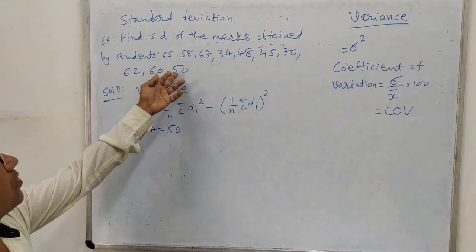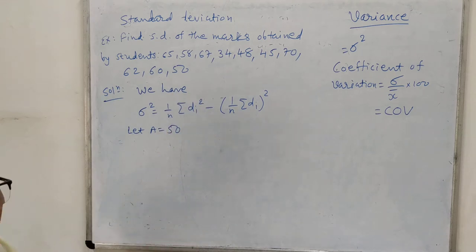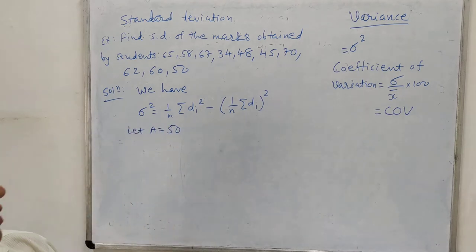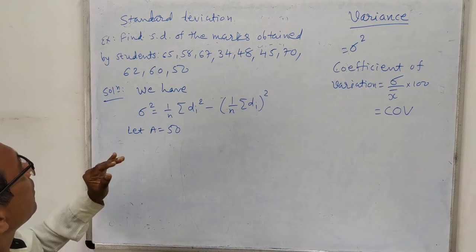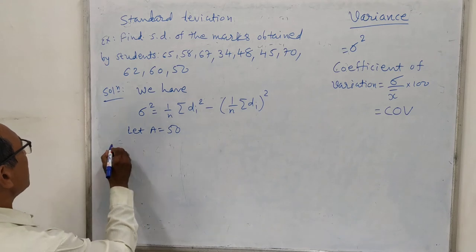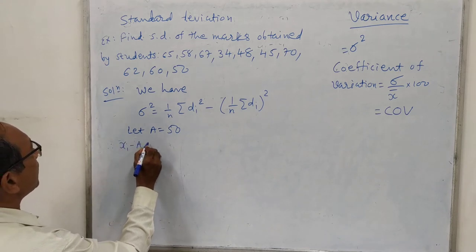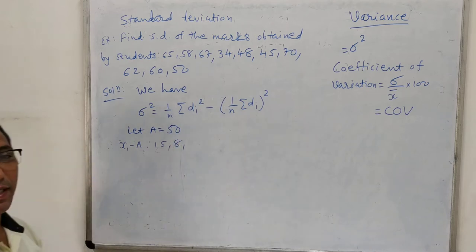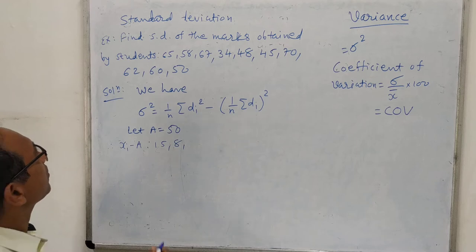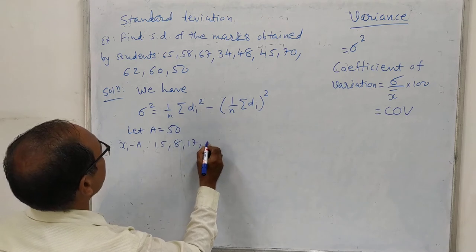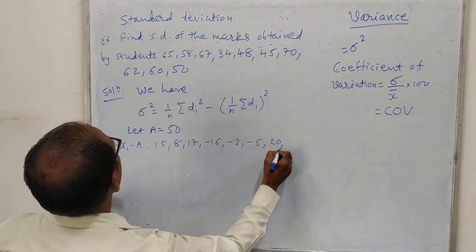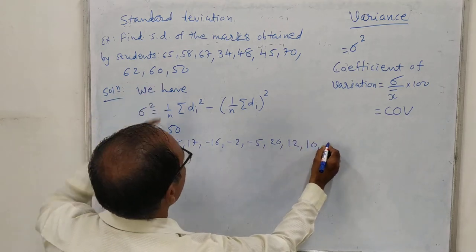We assume a equals 50. So di equals xi minus a. The di values are: 65−50=15, 58−50=8, 67−50=17, 34−50=−16, 48−50=−2, 45−50=−5, 70−50=20, 62−50=12, 60−50=10, 50−50=0. We can write this in a table, but here it would occupy too much space.